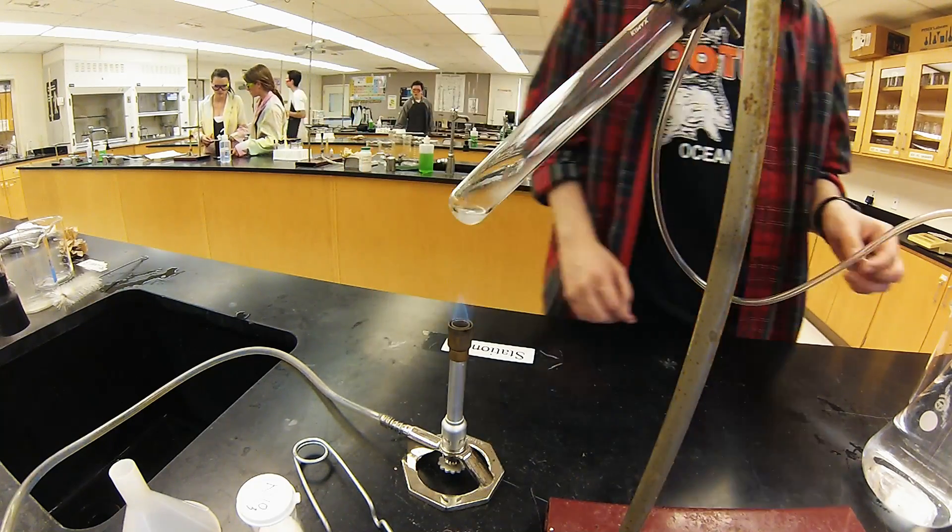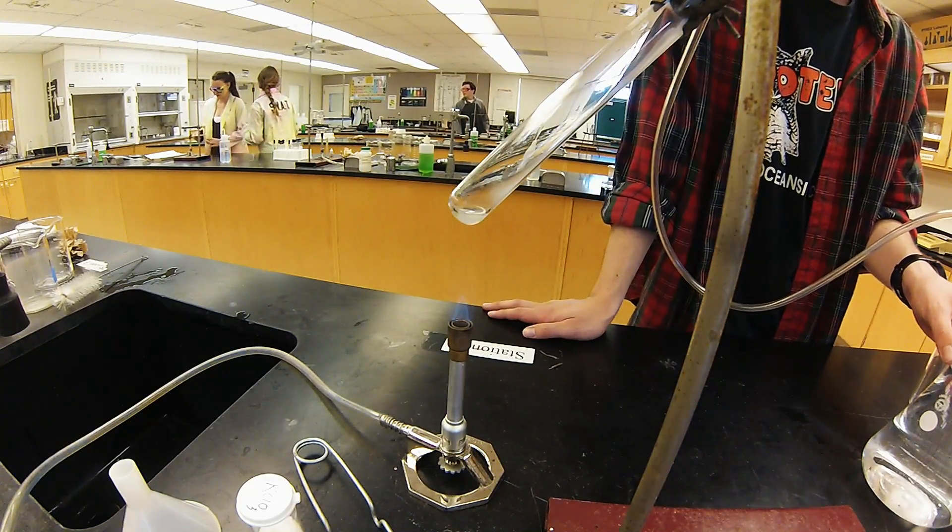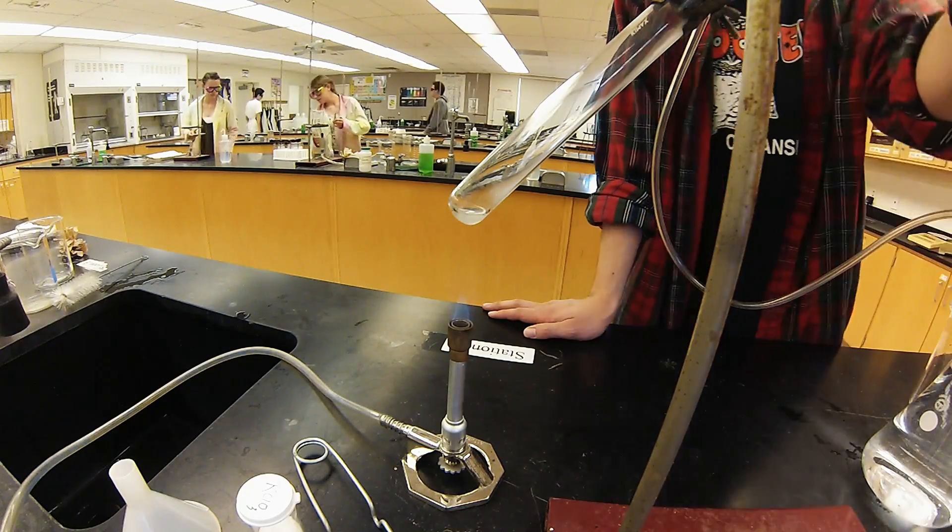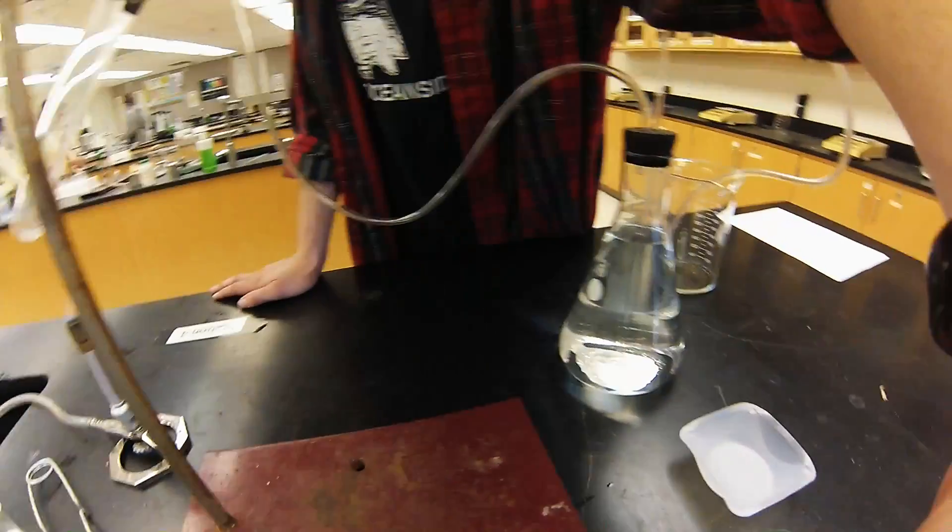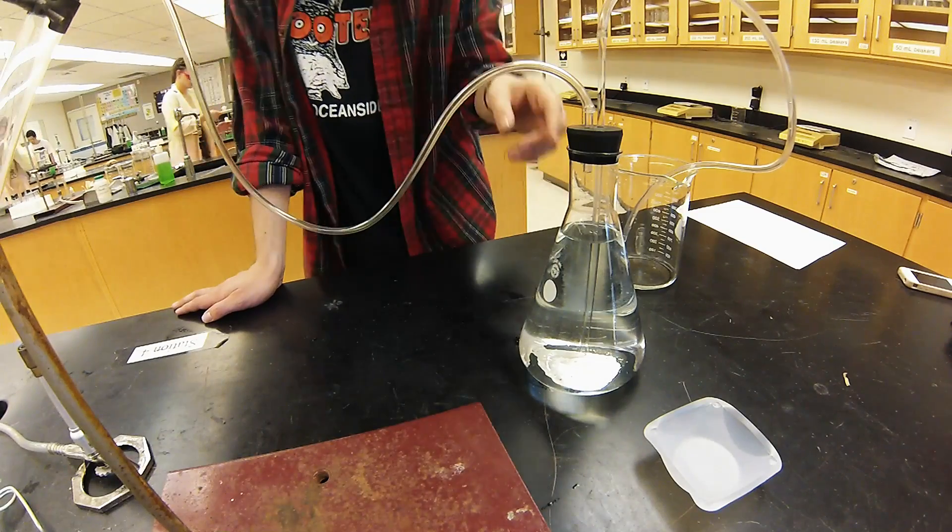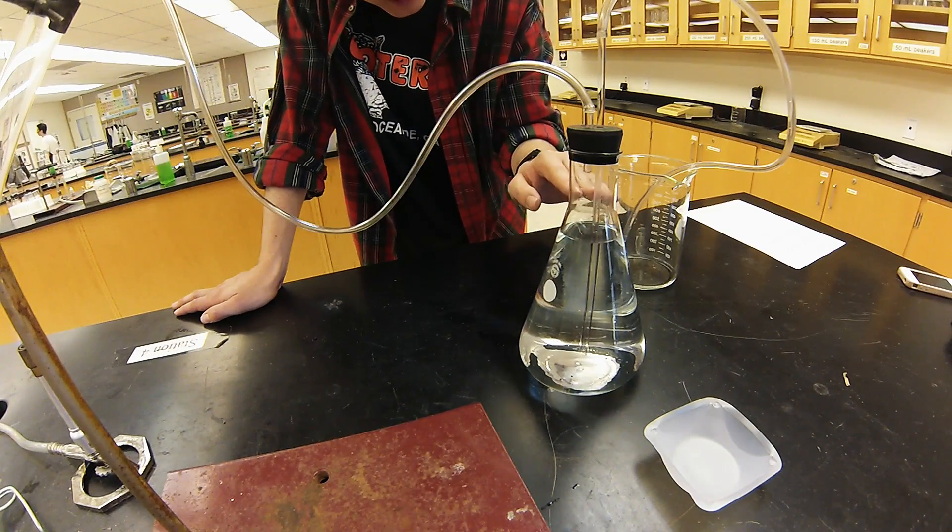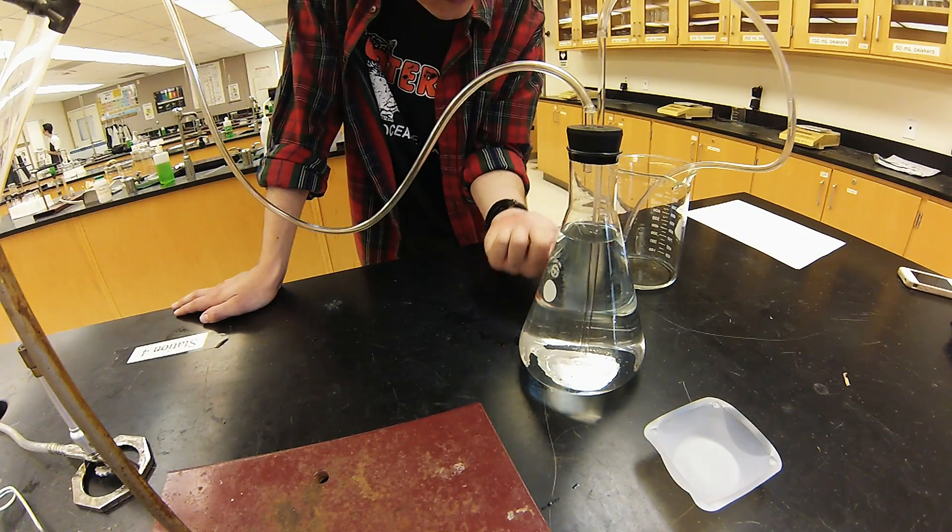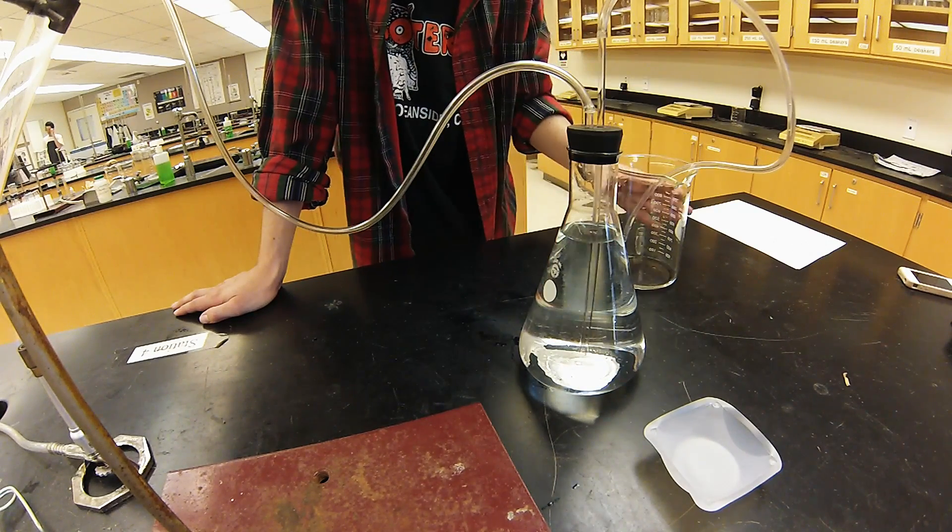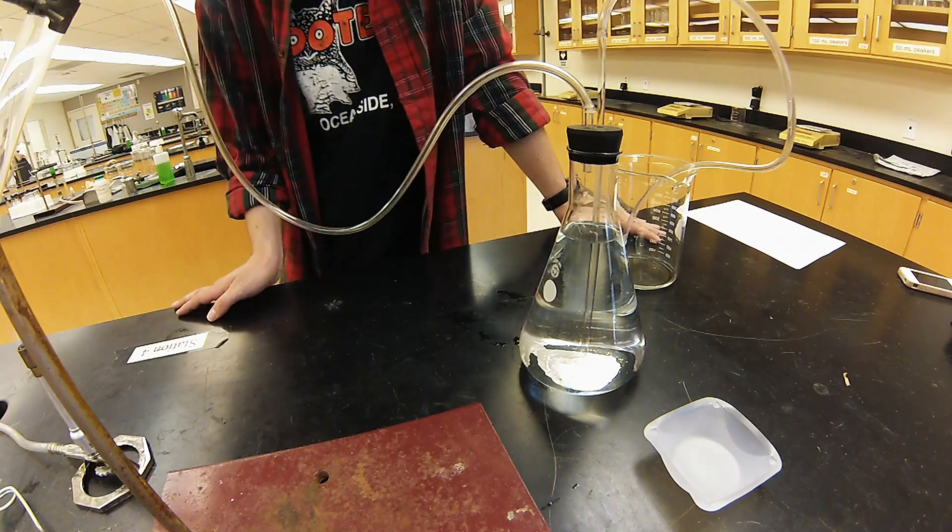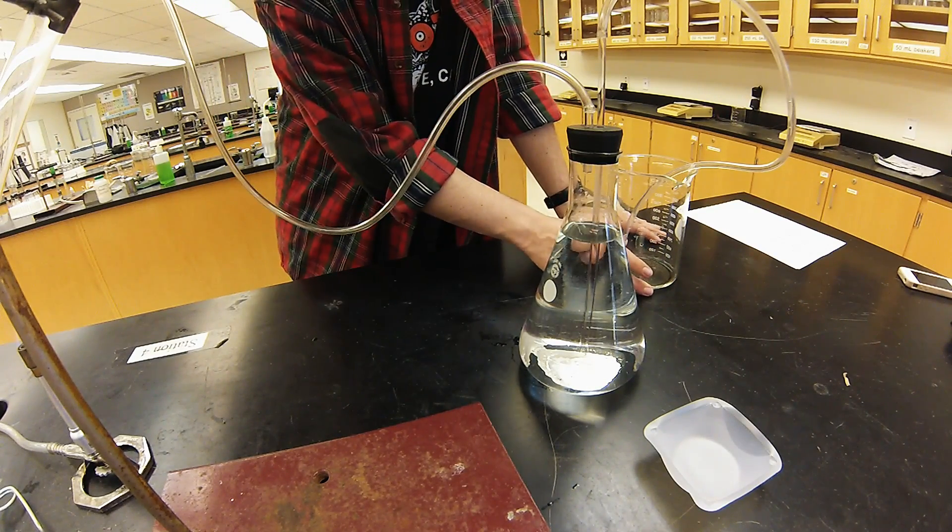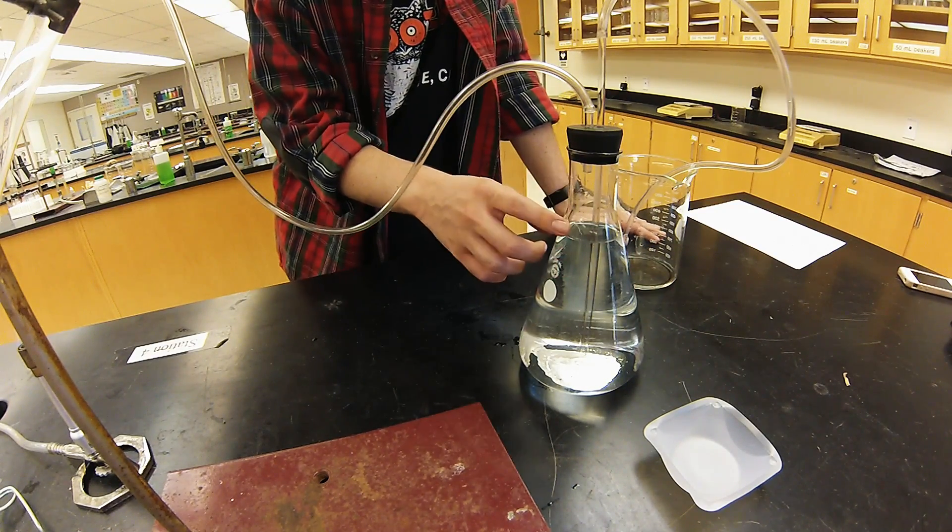And so when the Erlenmeyer flask has more gas being pushed in, it in return displaces water and pushes it into our large beaker. And there we will be able to measure the volume of water displaced by oxygen.